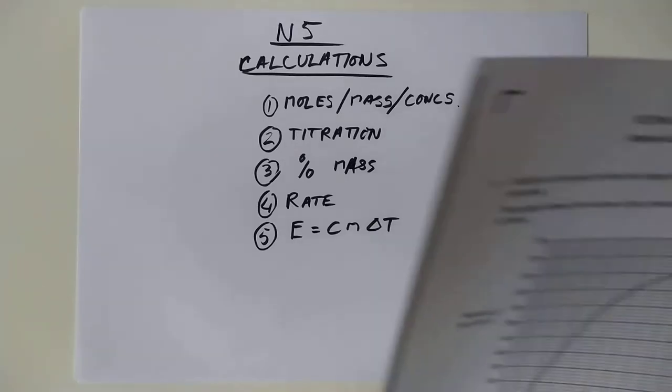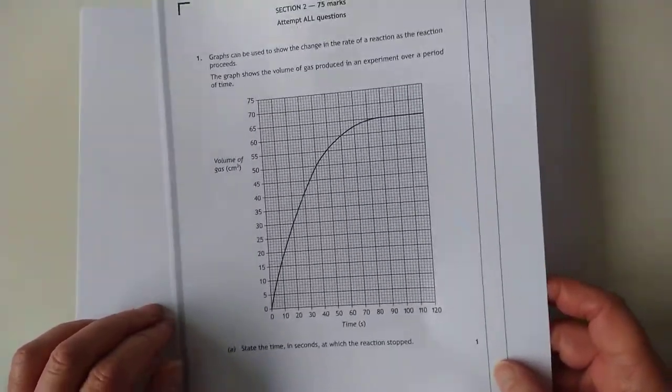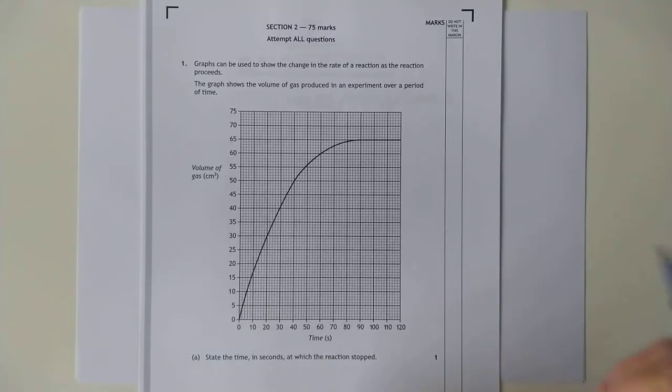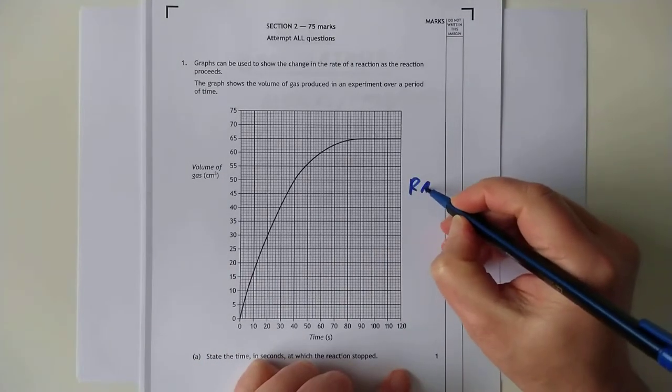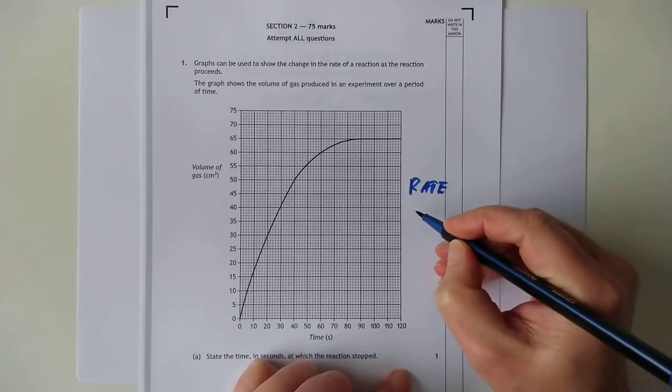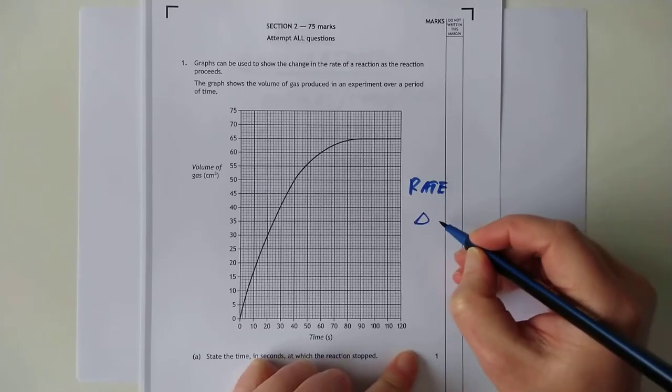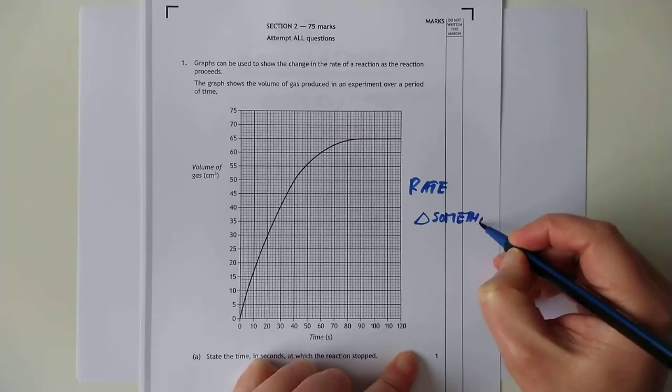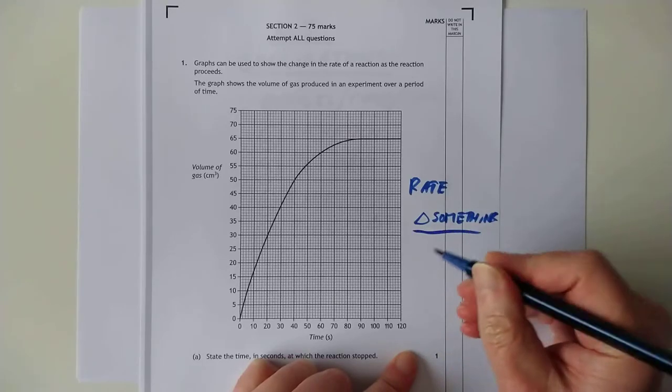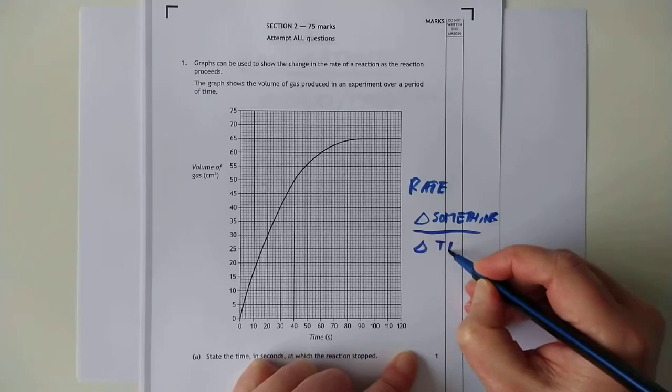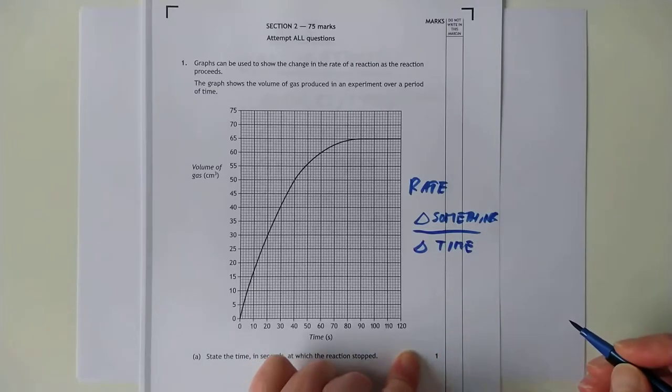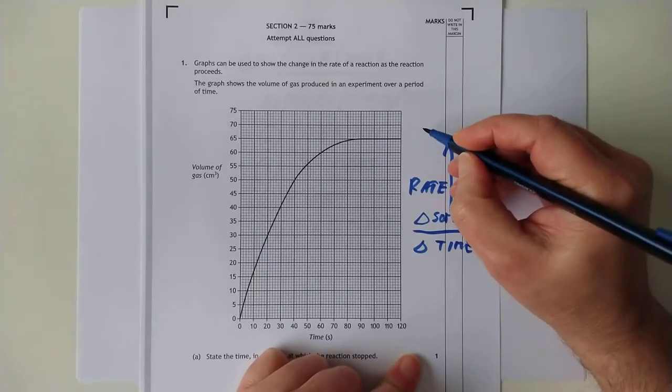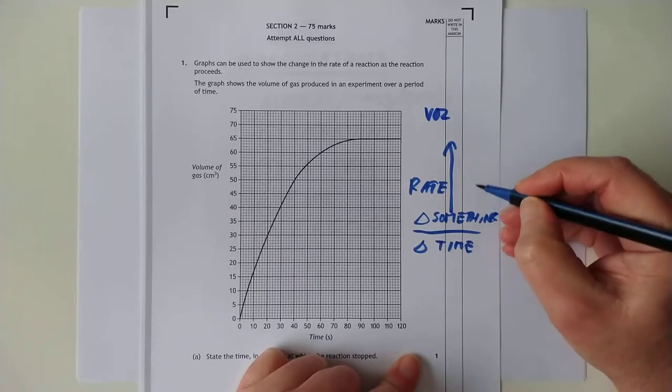And how do you calculate a rate? The answer is very easy in chemistry. Rate is calculated as the change in something, which doesn't sound very exact, divided by the change in time that it took for that to happen. Now, I say something. The two common somethings are volume in chemistry and mass.